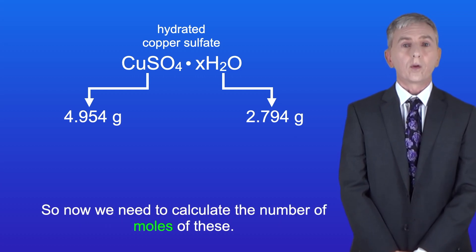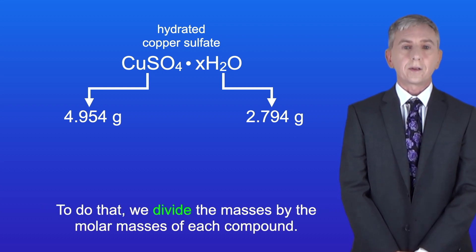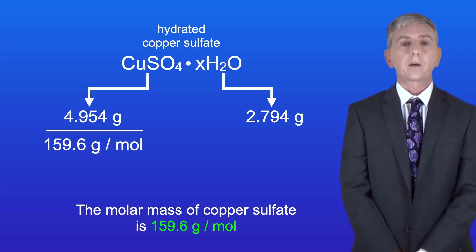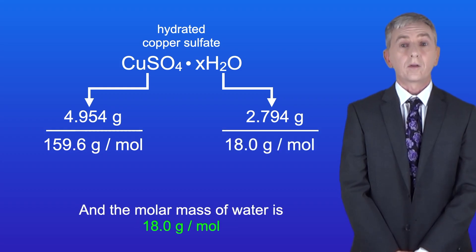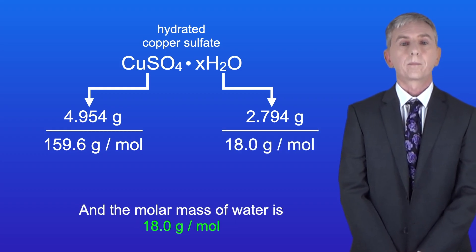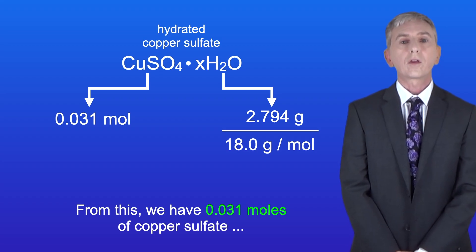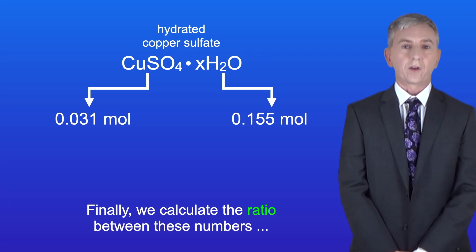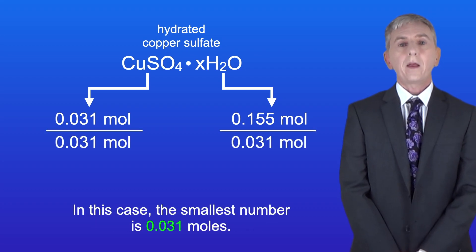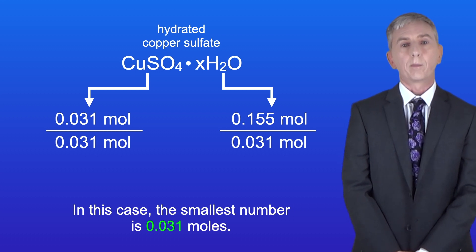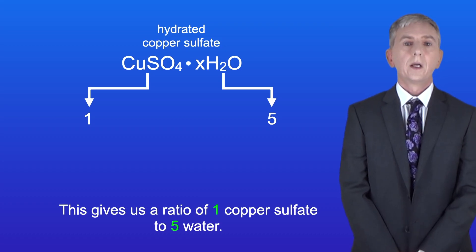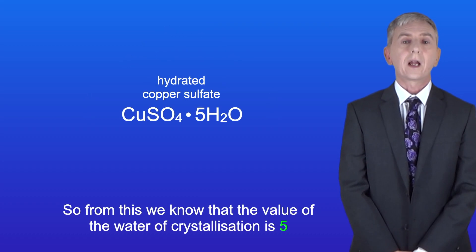Now we need to calculate the number of moles of each by dividing the masses by the molar masses. The molar mass of copper sulfate is 159.6 g/mol and the molar mass of water is 18.0 g/mol. This gives us 0.031 moles of copper sulfate and 0.155 moles of water. Finally, we calculate the ratio by dividing both by the smallest number — 0.031 moles — giving a ratio of 1 copper sulfate to 5 water. So the value of the water of crystallization x is 5.